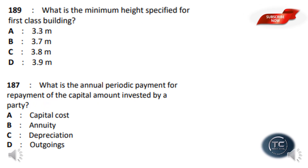What is the minimum height specified for a first-class building? The options are: 3.3, 3.7, 3.8, 3.9 metres. The answer is Option B — 3.7 metres.